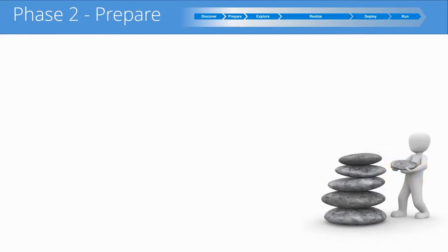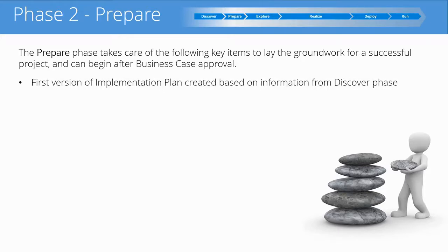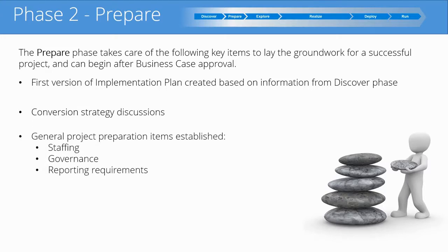The second phase in the Activate implementation is Prepare. In the Prepare phase, we take care of the following key items to lay the groundwork for a successful project. This begins after the business case generated at the end of the Discover phase is approved. The first thing we do is create an initial implementation plan based on the information from the Discover phase. We have discussions on the conversion strategy — how we are going to get from where we are now to where we want to be with S4 HANA. The general framework of the project is settled in terms of staffing, governance, and reporting requirements to management.